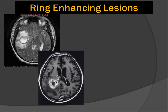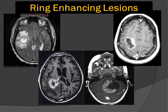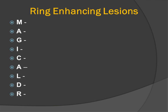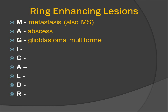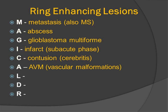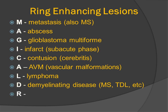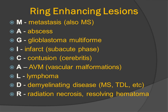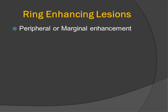Ring-enhancing lesions are a very common differential diagnosis in neuroimaging. Many people use the mnemonic MAGIC DOCTOR to remind themselves of the many different kinds: metastatic disease and multiple sclerosis, abscess, glioblastoma multiforme, subacute infarcts, cerebritis and contusion, AVMs and vascular malformations, lymphoma, demyelinating disease including tumefactive demyelinating lesions, and radiation necrosis or resolving hematomas.